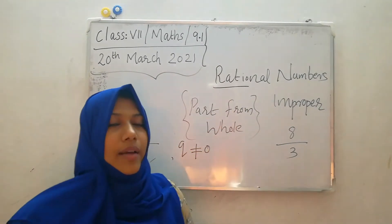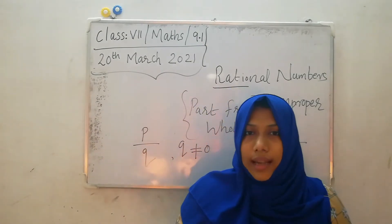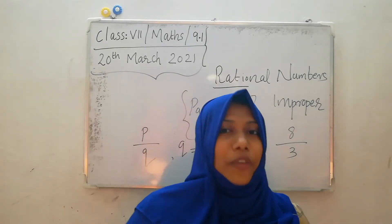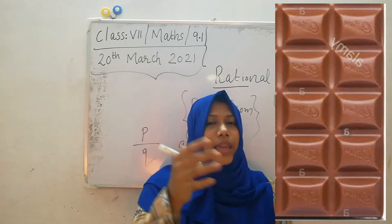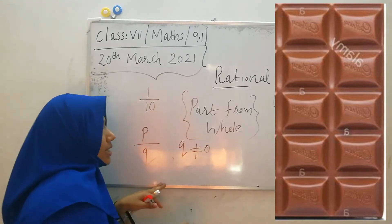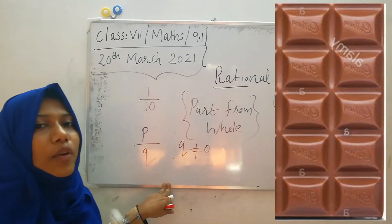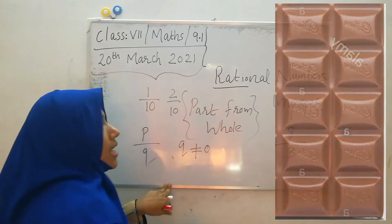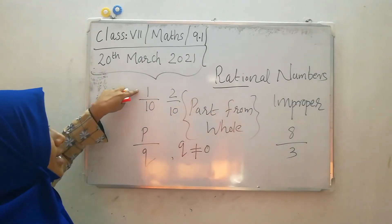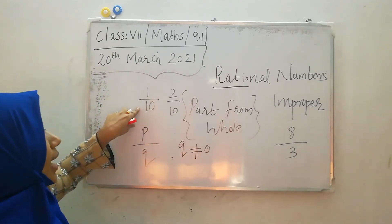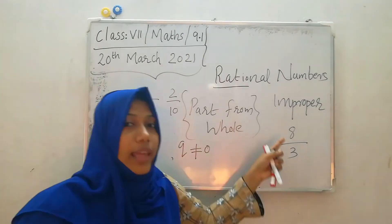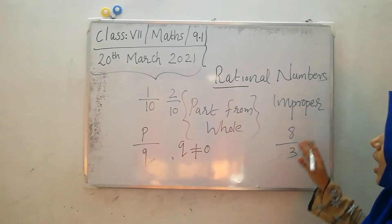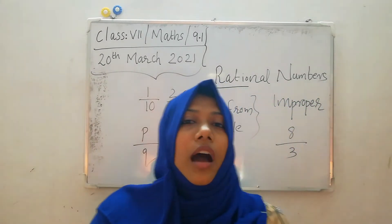Part from whole — when we divide the whole quantity equally, we can take some parts. When we take one piece of chocolate from 10 pieces, we call it the fraction 1 by 10. There are 10 equal parts and I took 1, so 1 by 10. If I took 2 pieces, 2 by 10. The numerator represents how many parts we took, the denominator represents how many equal parts there are. So 8 parts from 3 equal parts — never possible. Improper fraction is not practicable.